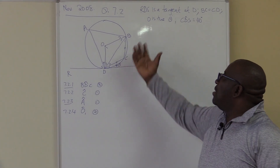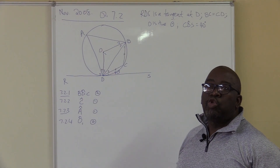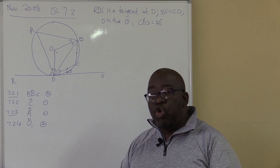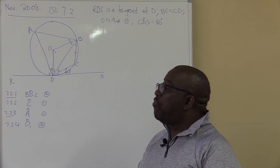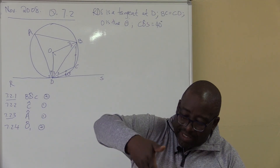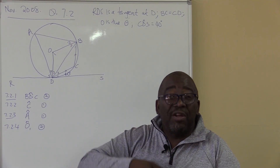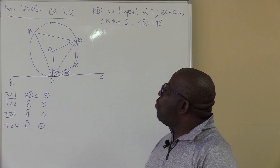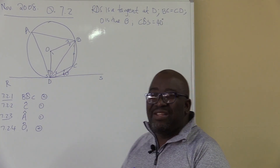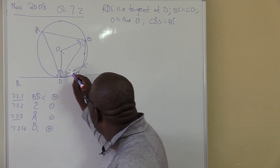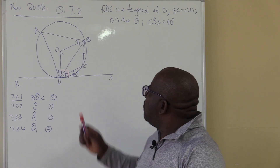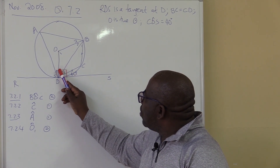Now, looking at the diagram — do we have two tangents coming from the same point outside this circle? No, we don't. So that theorem falls off. For the Tan-Radius theorem: whenever a radius meets a tangent, 90 degrees is formed. Do I have that here? Yes. This is a radius and this is a tangent, meaning this whole angle here is 90 degrees. So if this one is 40, this other one will be 50.